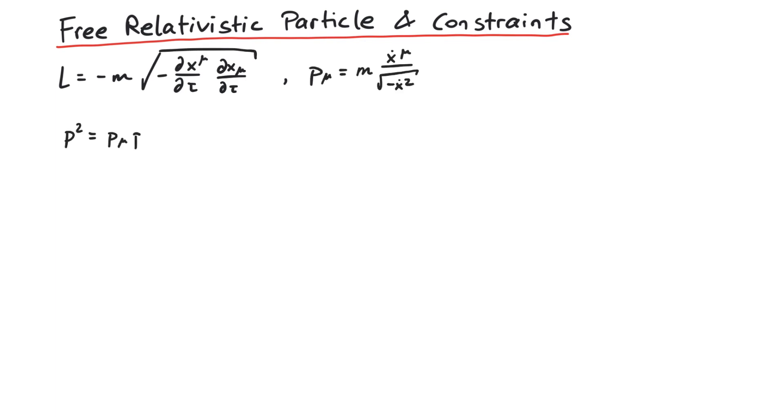If we calculate p squared, we see that it is equal to minus m squared. If we define some function phi as p squared plus m squared, it is always identical to zero, regardless of the exact configuration of the system. This is called a constraint.